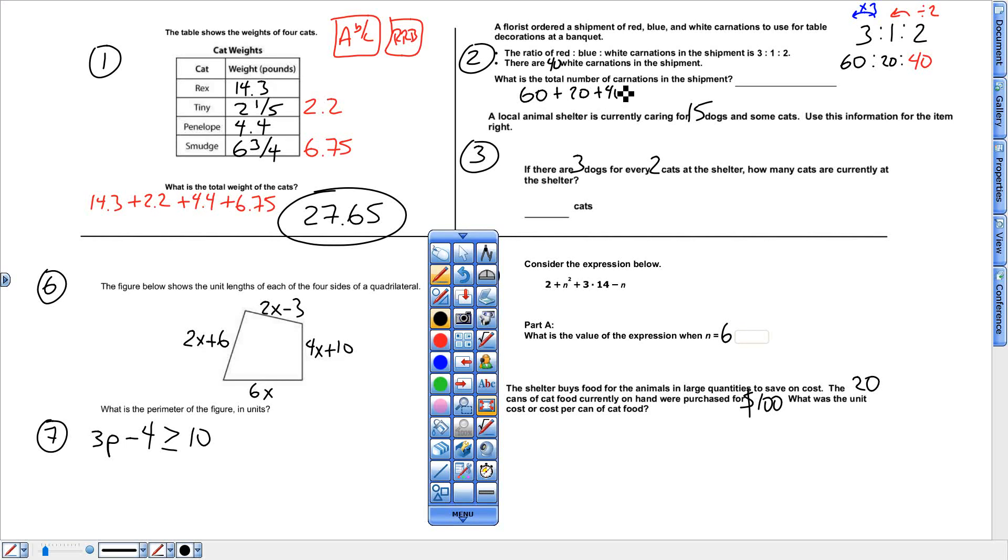Gives me 80 plus 40 gives me 120. All right, next one. 15 dogs and some cats. So here we go. They give you a ratio, 3 dogs for every 2 cats, and they give you one of the numbers, number of dogs.